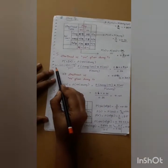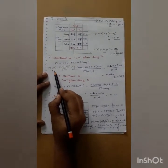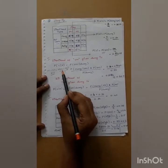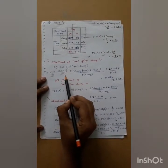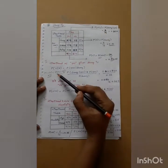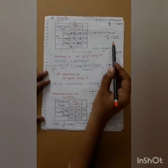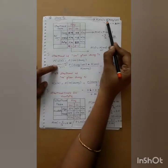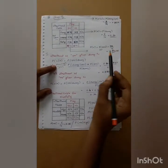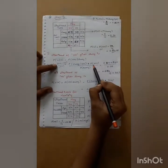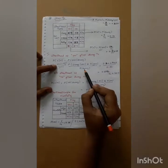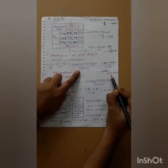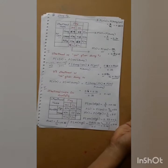Now we calculate the likelihood of yes given sunny using Bayes theorem: P(c|x) = P(x|c) × P(c) / P(x). Substituting the values — P(x|c) is 0.22, P(c) is 0.642, and P(x) is 0.36 — the value we get is approximately 0.357.